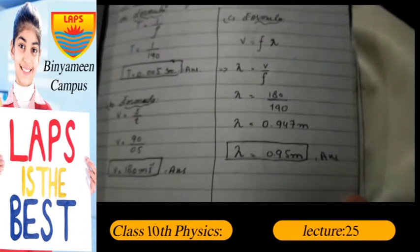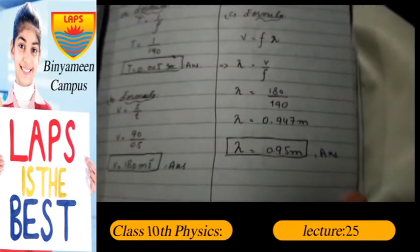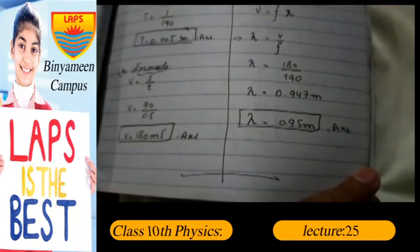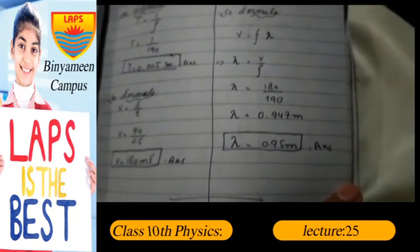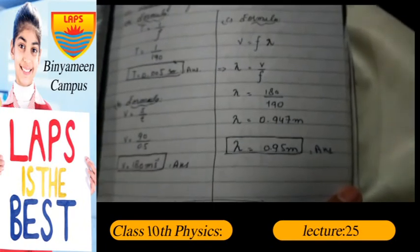We get three answers: time period T = 0.005 seconds, speed v = 180 meters per second, and wavelength lambda = 0.95 meters.